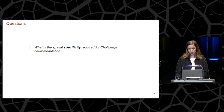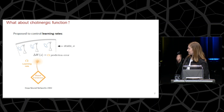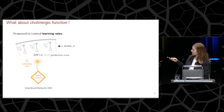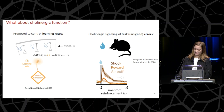Our first question is: what is the spatial specificity required for cholinergic modulation? To answer this, we need to think about what the cholinergic system is for. Acetylcholine is involved in many things such as arousal and attention, but we focus here on its role in learning and synaptic plasticity. For example, Doi proposed in their 2002 paper that acetylcholine controls the learning rate in a reinforcement learning setting, where a cortical area receives state information relevant to state s, and its weight update is partially modulated by the learning rate alpha, which is in turn modulated by the cholinergic system.